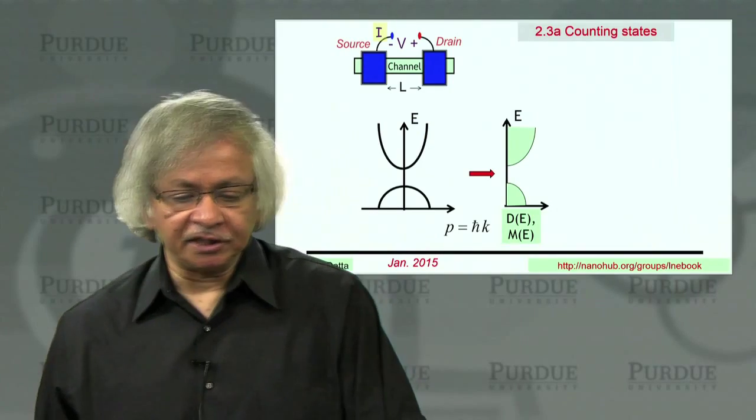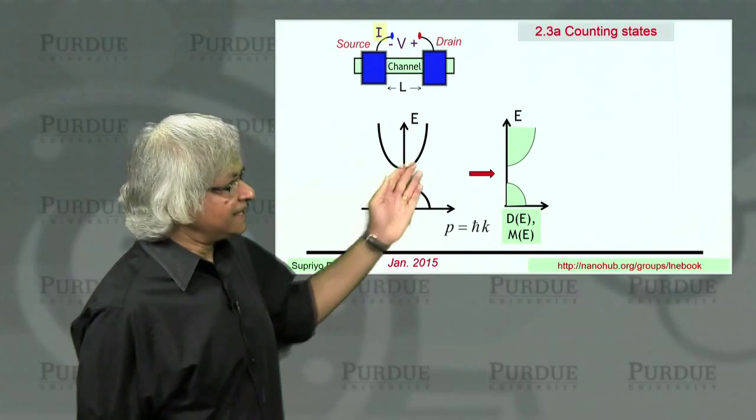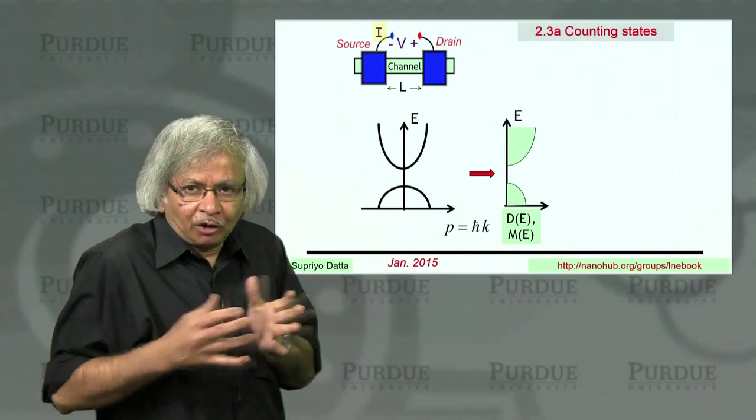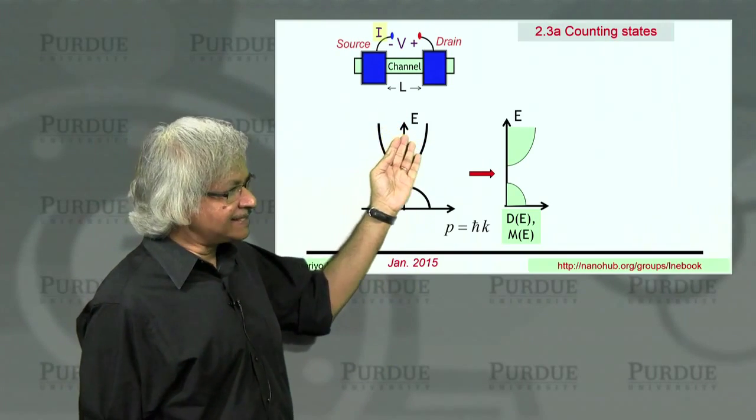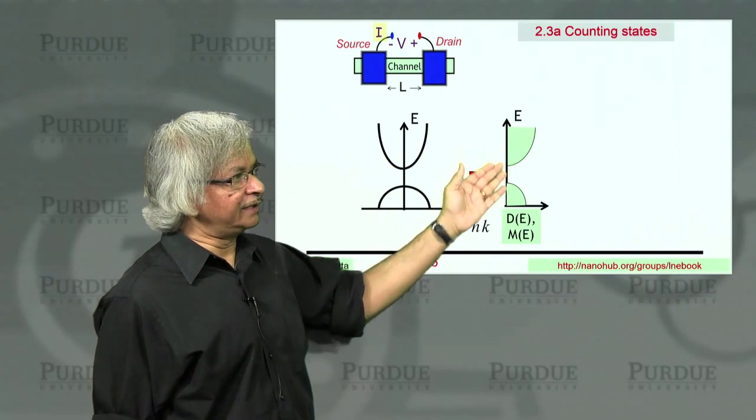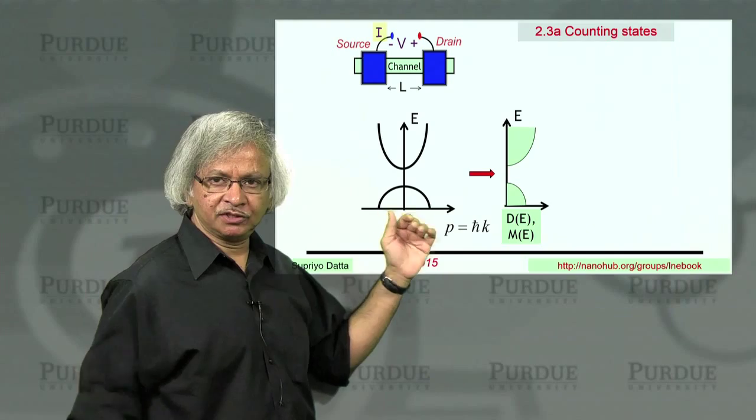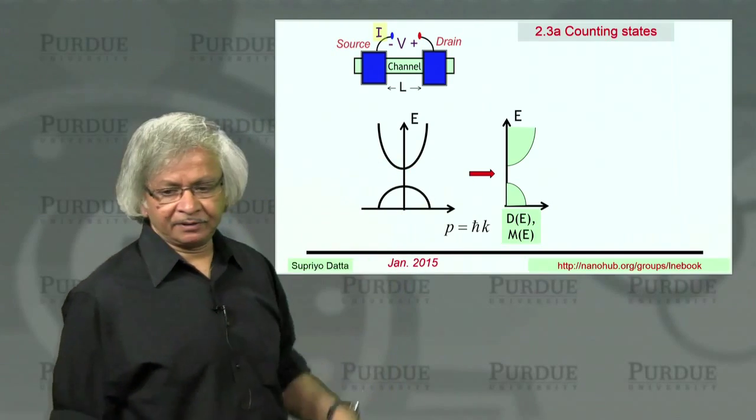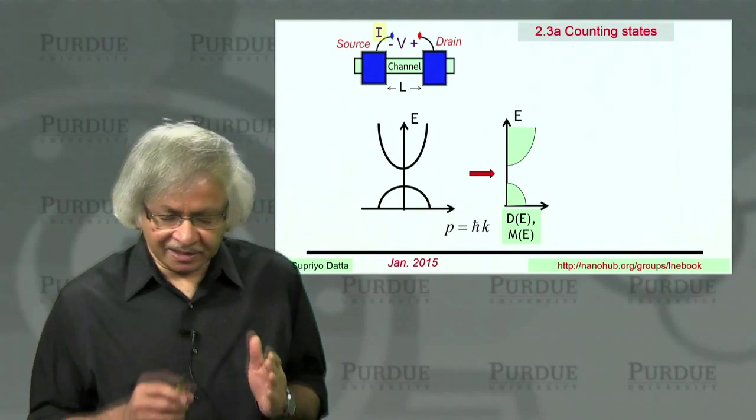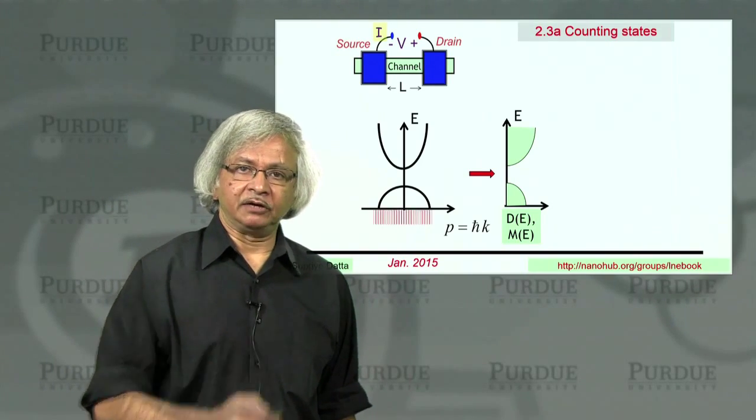In our last lecture we talked about this energy momentum relation. What we want to do is translate and give an energy momentum relation into a density of states or number of modes. An important step in the process is this idea of counting states, and that's what this lecture is about.